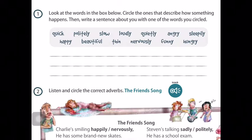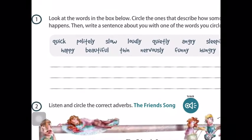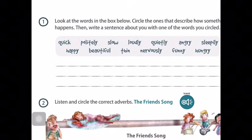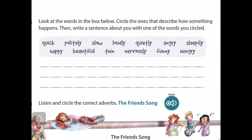Okay? The words that describe how something happened are the words that finish with the letters L-Y. Politely, loudly, quietly. My brother speaks quietly. My sister acts nervously. Okay?